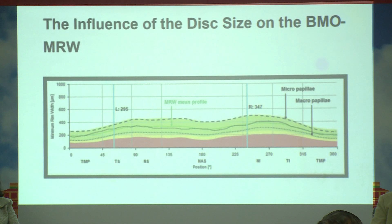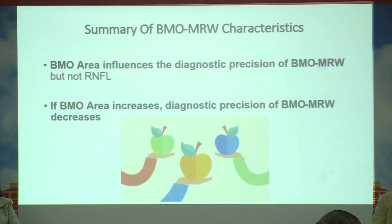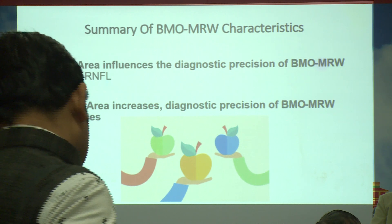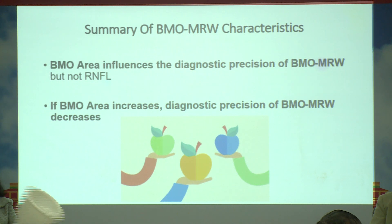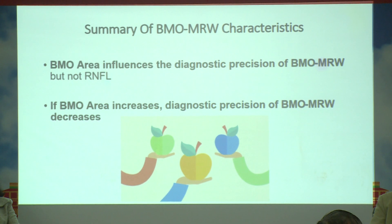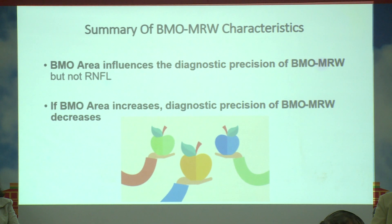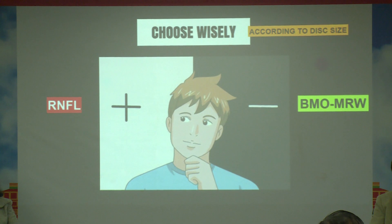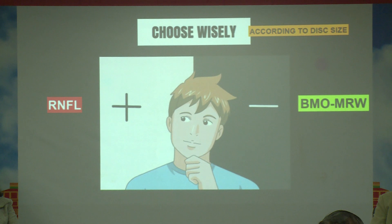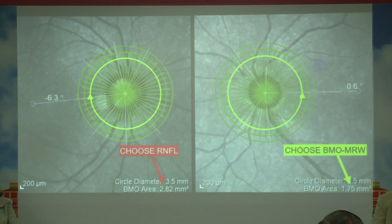That kind of influence is reduced somewhat when we take BMO-MRW into the equation. The BMO area is essentially the disc area — another term OCT brings into play. When the BMO area increases, the diagnostic precision of BMO-MRW decreases, but not that of RNFL. This is very important: whenever there is a larger disc, you should choose RNFL because BMO-MRW will be smaller. When the disc is smaller, BMO-MRW will be more reliable.